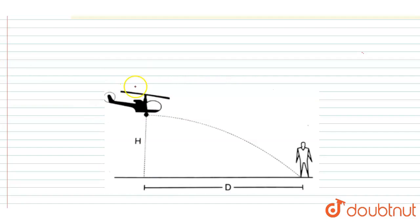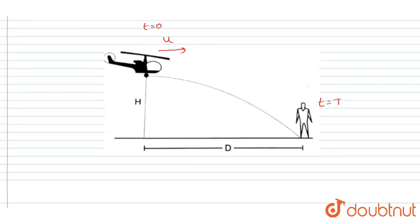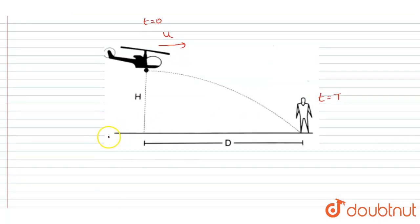So if the food packet is dropped from this helicopter, then the velocity of the food packet will also be same as that of helicopter. So this velocity is given here u at t goes to zero. Let's suppose it is dropped. So at t goes to capital T it will reach to the ground.